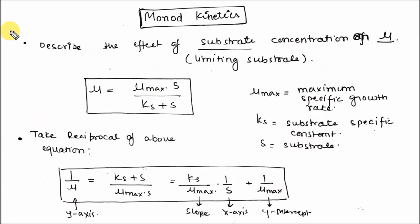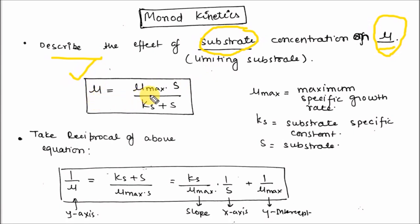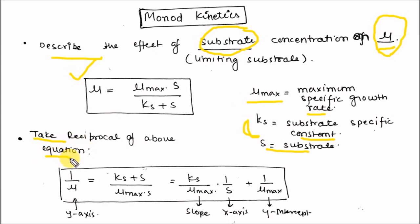What is Monod kinetics? It is similar to the Michaelis-Menten equation in enzyme kinetics. It describes the effect of substrate concentration on the specific growth rate constant. Monod derived the equation: mu = mu_max × S / (Ks + S). Here mu_max is the maximum specific growth rate, Ks is the substrate saturation constant, and S is the substrate concentration. The units of Ks and S are the same. Taking the reciprocal of the above equation, like the Lineweaver-Burk equation for enzyme kinetics, you will get a linearized form similar to y = mx + c.